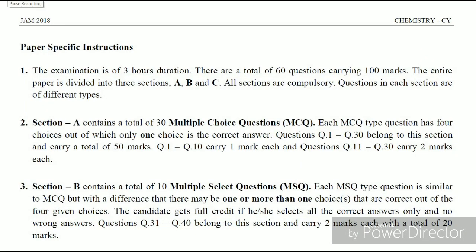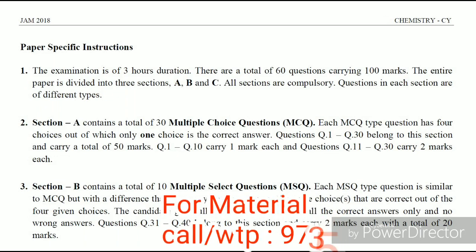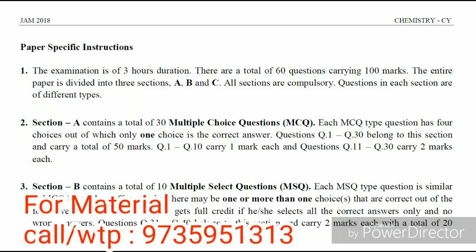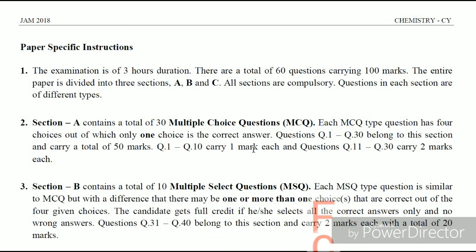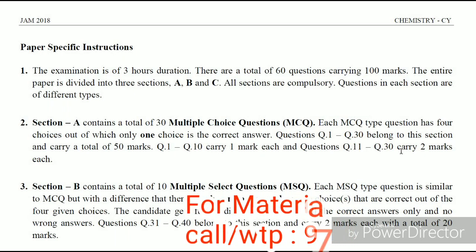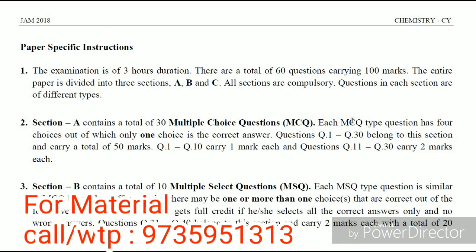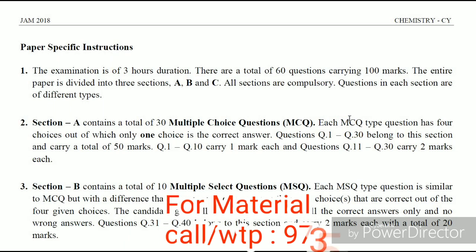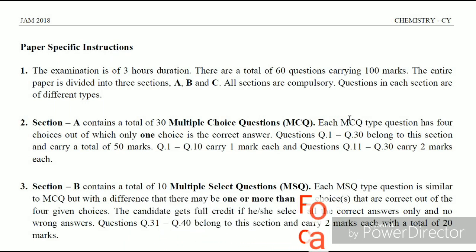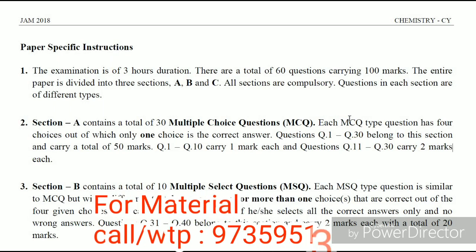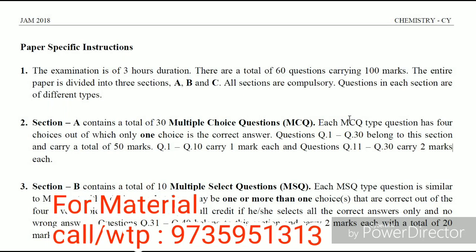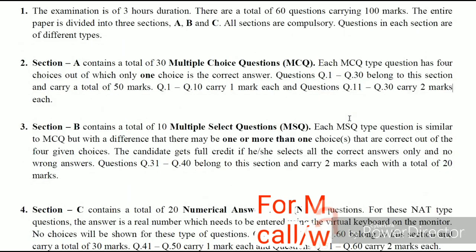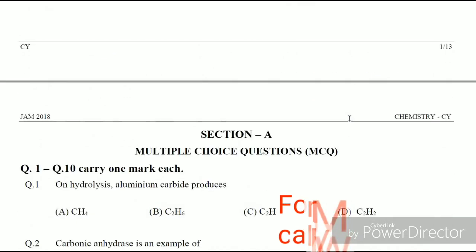So here it's the JAM 2018 question paper, which has generally three parts: A, B, and C. In Part A, the first 10 questions carry one mark each, and the remaining 20 questions carry two marks each. Section B contains 10 questions worth two marks each. For Part C — numerical answer type questions — the first 10 questions contain one mark each, and the last 10 questions contain two marks each.